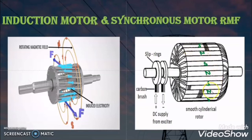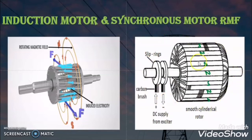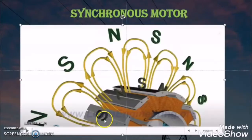Due to this DC excitation in the rotor winding of the synchronous motor, the rotor winding will create its own poles. There is also the rotating magnetic field which has its own poles. So in the synchronous motor, due to the DC excitation, the rotor winding will have its poles depending on how we wound the rotor winding. Here in the animation, you can see that the rotor will have its own poles.